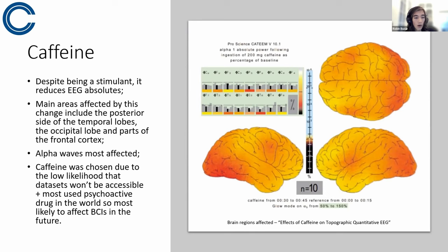Caffeine was chosen in this study, so besides the fact that it is quite straightforward, its effects are quite straightforward on the brain, it was also chosen due to the low likelihood that datasets won't be accessible, at least that's what I thought initially when I started this study. Now I've had some issues with getting either access or actually finding EEG datasets where caffeine was analyzed. And yeah, it's also true that caffeine is the most used psychoactive drug in the world, and that would make creating a MATLAB script that tackles its activities of much more importance and applicability in the future.